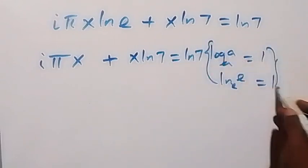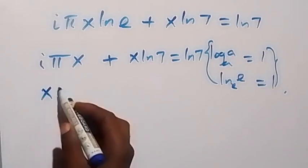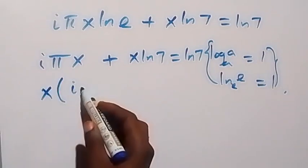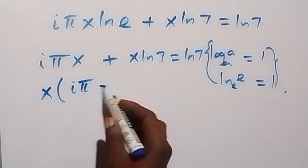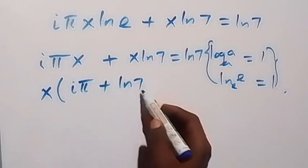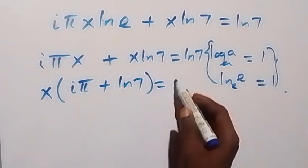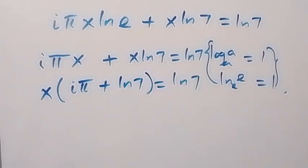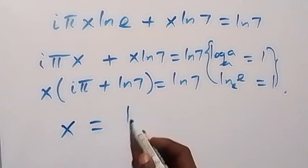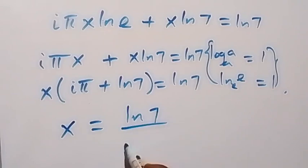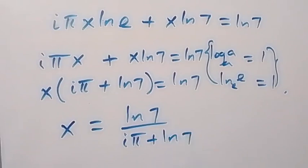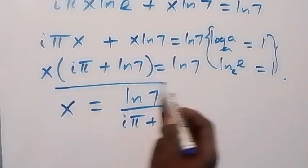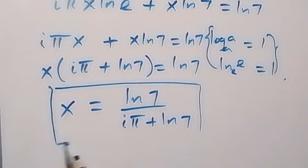From here, x is common, so we factor x out and we have x times (iπ + ln 7) equals ln 7. Since we are finding x, we divide both sides by (iπ + ln 7), giving x equals ln 7 over (iπ + ln 7). That is the value of x for method one.